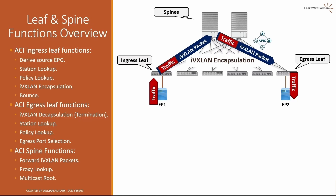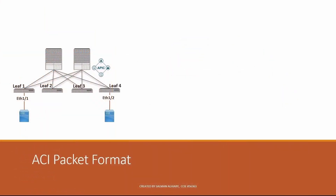Now let's talk about the ACI packet format. Each leaf switch has a VTEP address assigned by APIC, which is used in the forwarding process. For example, leaf 1 has 172.16.0.1 and leaf 4 has 172.16.0.2. The VTEP address is chosen from the address pool provided during ACI fabric initial setup, and is automatically configured on the loopback 0 interface of each switch, where it is used for leaf-to-leaf reachability to forward IVXLAN-encapsulated packets.